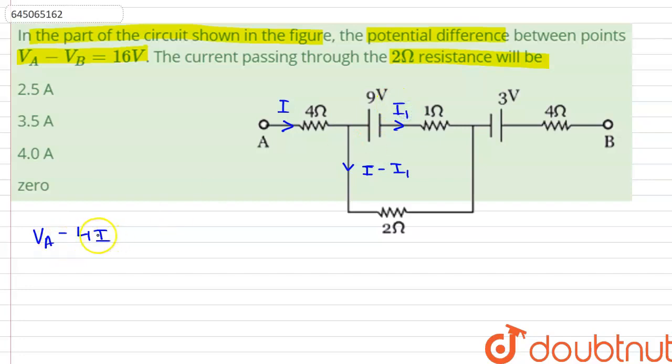Therefore, Va minus 4 times I minus 9 minus I1 minus 3 minus 4 times I is equals to Vb.